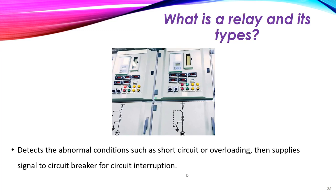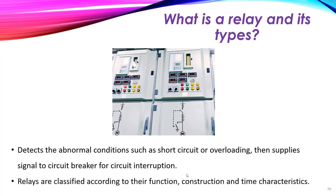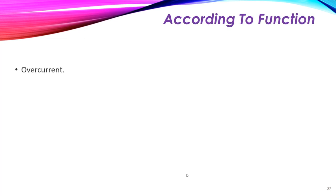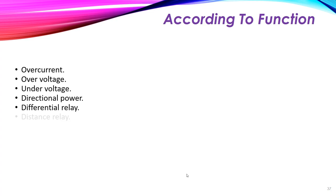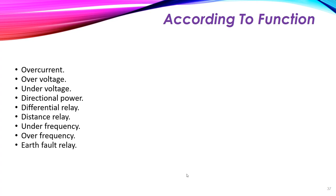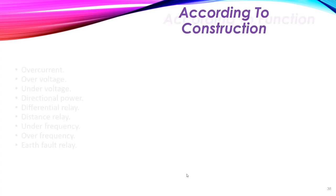Relays are classified according to: number one, their function; number two, their construction; and number three, their time characteristics. According to function, the relay can be classified as: overcurrent relay, overvoltage relay, undervoltage relay, directional power relay, differential relay, distance relay, under-frequency relay, over-frequency relay, and earth fault relay.